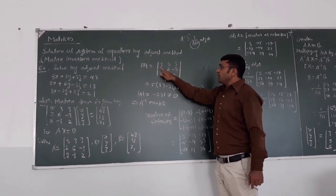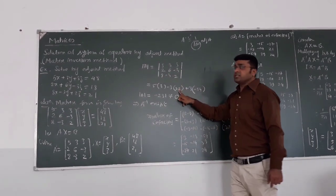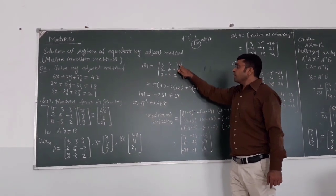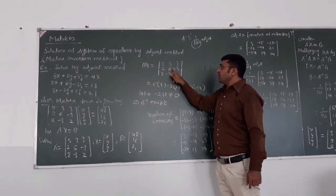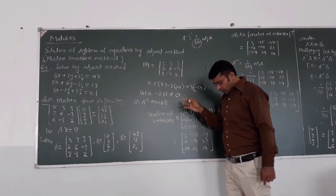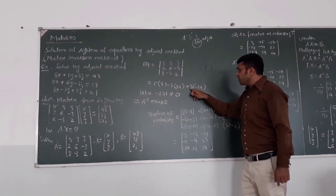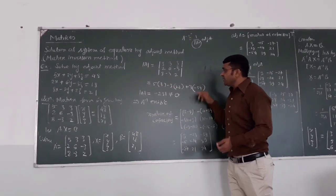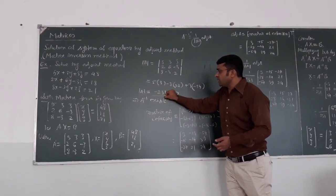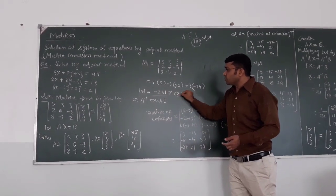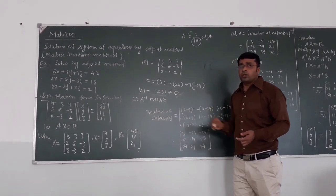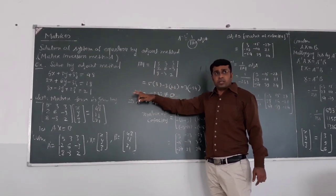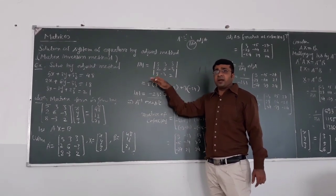Then expanding by the first row: minus 3 for the second element (leaving its column and row, cross-multiplying the remaining elements), then plus 3 for the third element. The result simplifies to minus 54, and adding all terms gives the determinant as minus 231, which is not equal to zero — so matrix A is non-singular and A inverse exists.